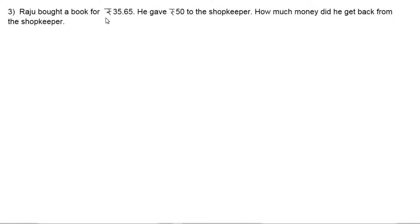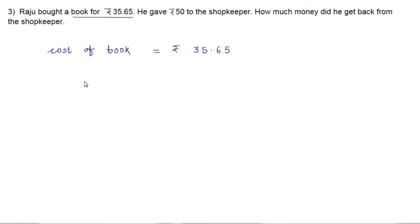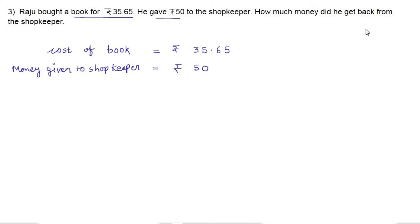According to the question, Raju purchased a book costing 35 rupees 65 paisa, and for that he paid 50 rupees to the shopkeeper. Now we need to calculate the money he is going to get back. The cost of the book is rupees 35.65, and the money given to the shopkeeper is rupees 50.